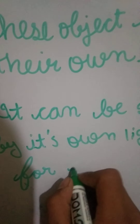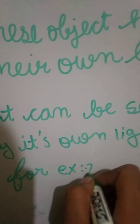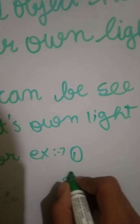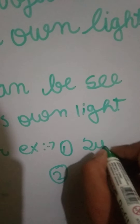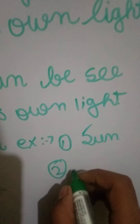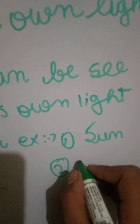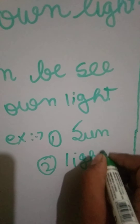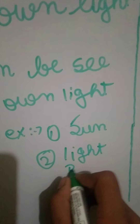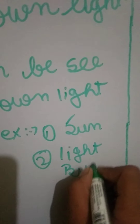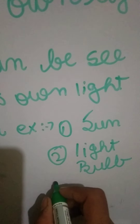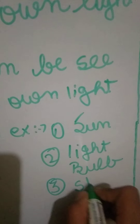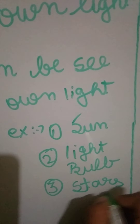For example, we take two examples of luminous objects: first, the sun, and then the light bulb and stars, etc.